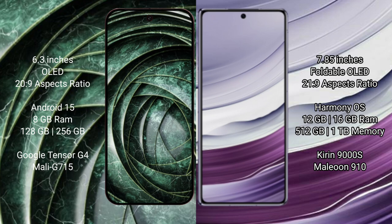Google Pixel 9a comes with 8GB RAM, minimum 128GB to 256GB internal storage, Google Tensor G4 processor and Smalley GPU.